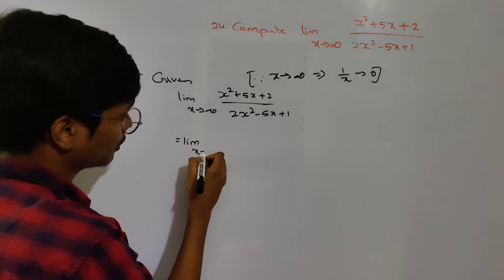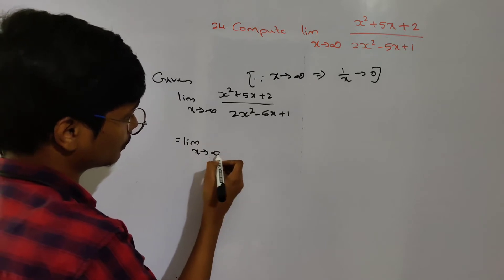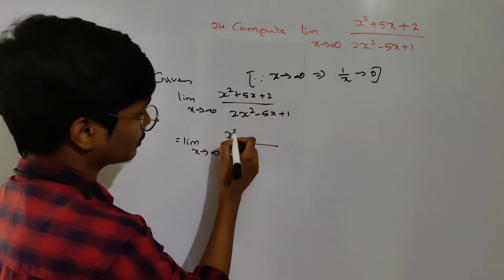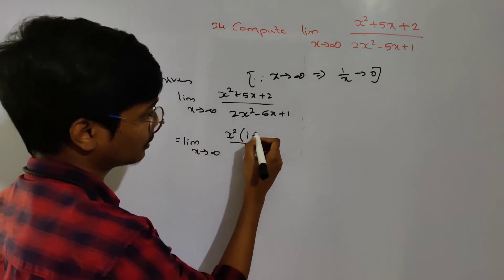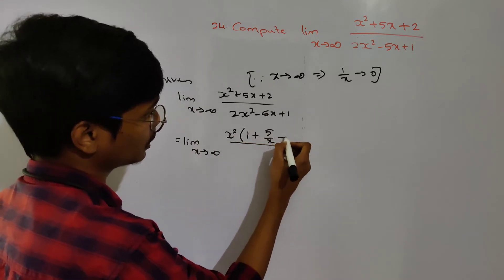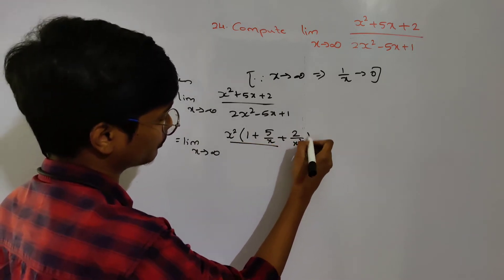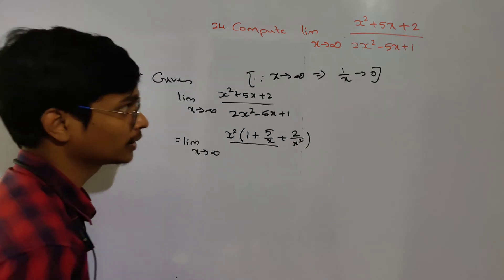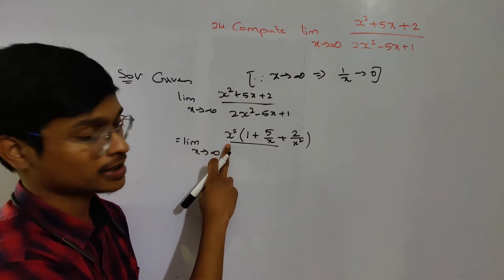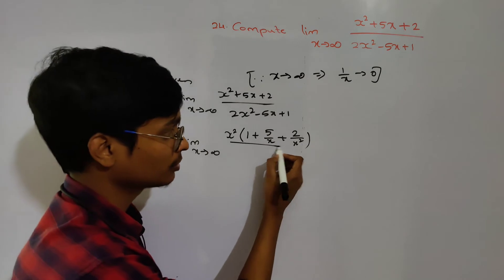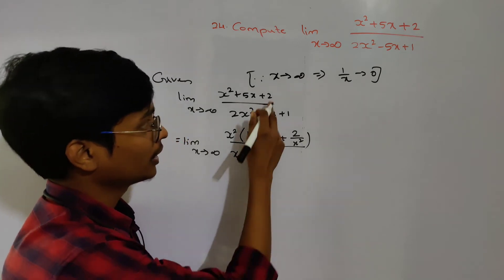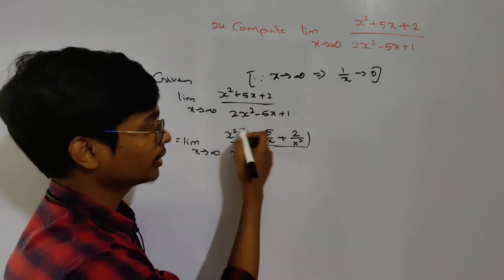Let's write: limit x tends to infinity. The highest power is x squared. We divide by x squared. So the numerator becomes 1 plus 5 by x plus 2 by x squared. You can divide by x squared to simplify.